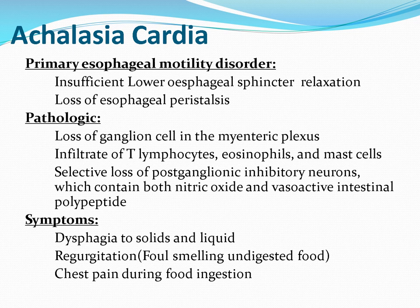Achalasia cardia is a primary esophageal motility disorder. There is failure of relaxation of the cardiac end of the esophagus, decreased peristalsis, and failure of relaxation of the cardiac sphincter. Pathologically, there is absence of the myenteric plexus at the cardiac end. Biopsy shows infiltrates of lymphocytes, eosinophils, and mast cells, and absence of certain hormones in the neurons.